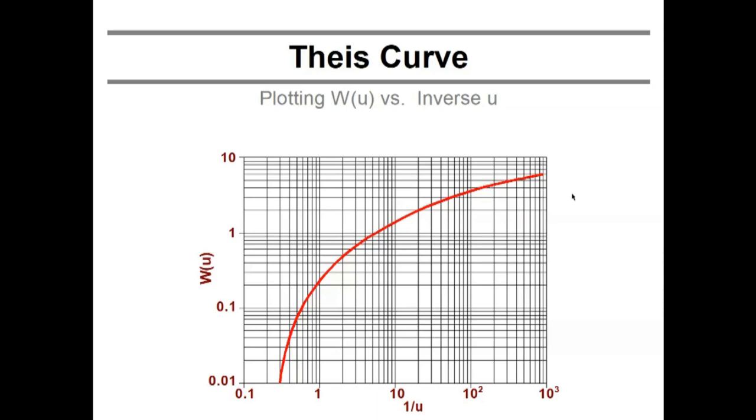And Lubin told Theis, this curve is a constant. It will never change. These are the set values, the constant values plotted against each other in this manner. That is your reference standard right there.